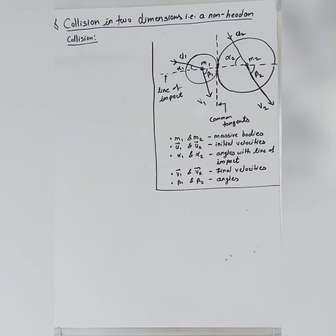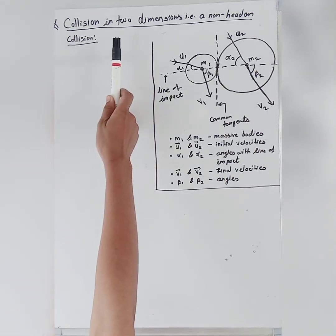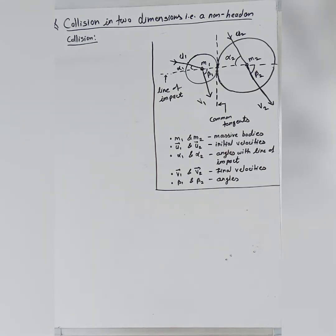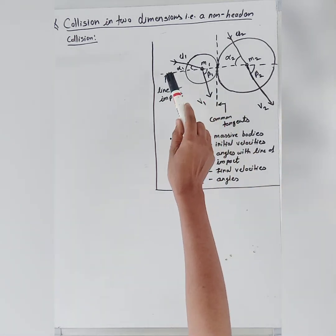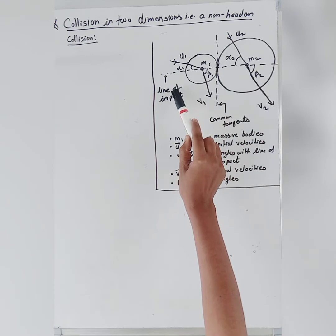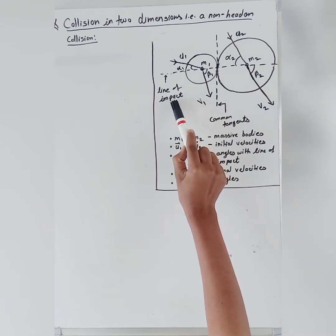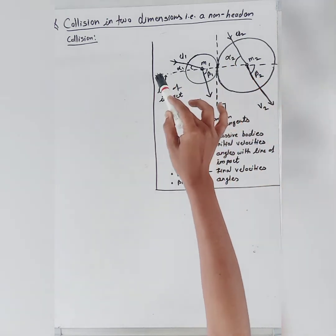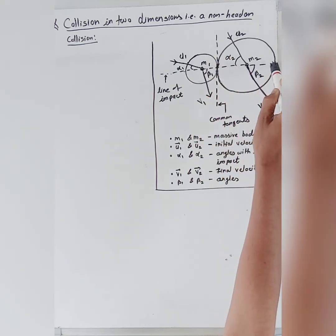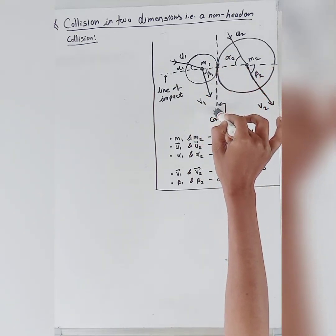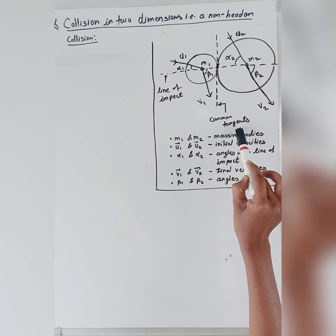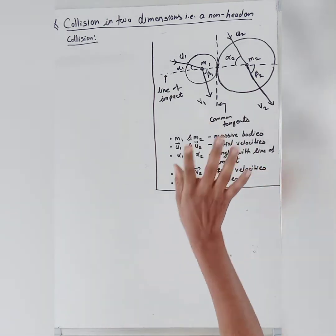Hello students. In this session we are going to study collision in two dimensions, that is a non-head-on collision. As you can see in the diagram, the dotted line is called the line of impact. The line which is perpendicular to the line of impact is called the common tangent.